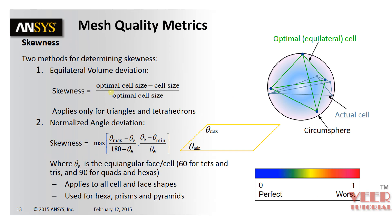Similarly, we have something that is called skewness. Now we can calculate the skewness using this formula that is optimal element size minus optimal cell size divided by optimal cell size. So optimal means a perfect element.